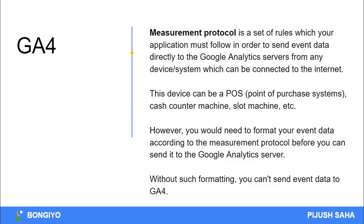Without such formatting you can't send event data to Google Analytics server, so Google doesn't have data in Google Analytics server. This is the process of measurement protocol — a set of rules maintained by the parameters that have been defined for data to pass.